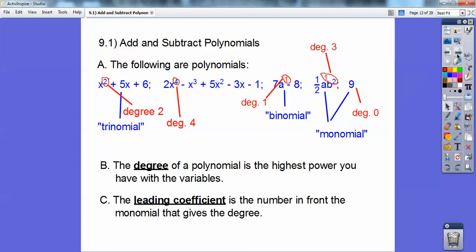Alright, and then the leading coefficient is the number that's in front of the monomial that gives the degree. So the leading coefficient over there is 1. If there's no number there, it's understood to be a 1. The leading coefficient of this guy is 2.